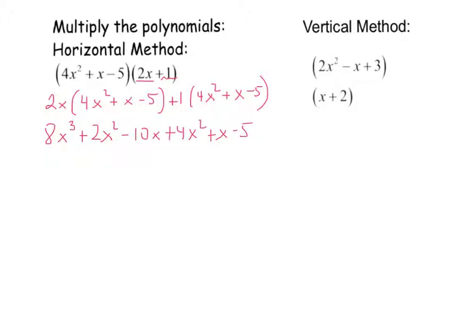If I combine like terms I have 8x to the 3rd, then 2x squared and 4x squared which gives me 6x squared, then negative 10x and x which gives me negative 9x, and lastly negative 5.